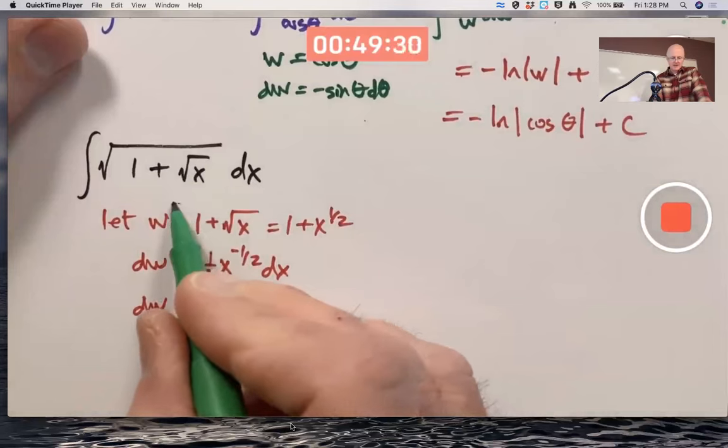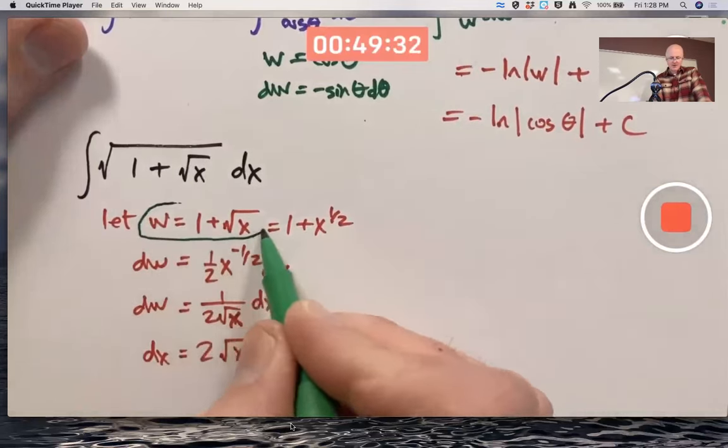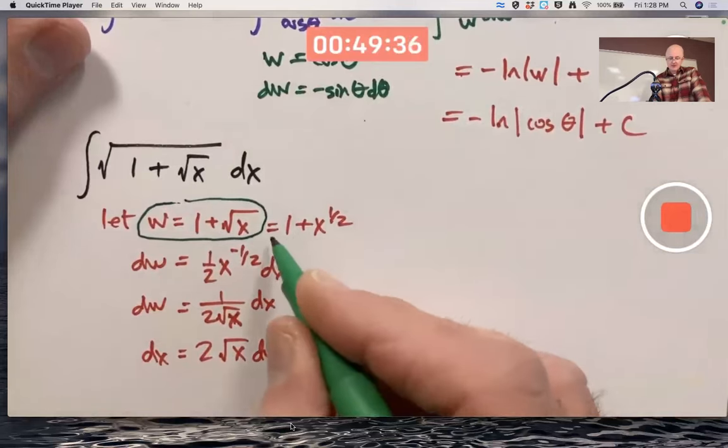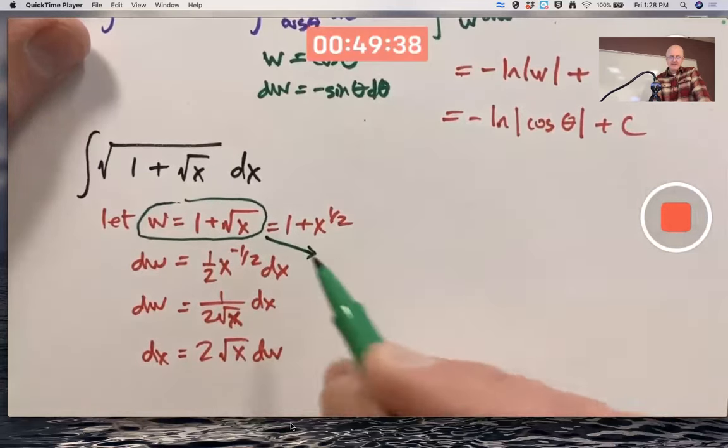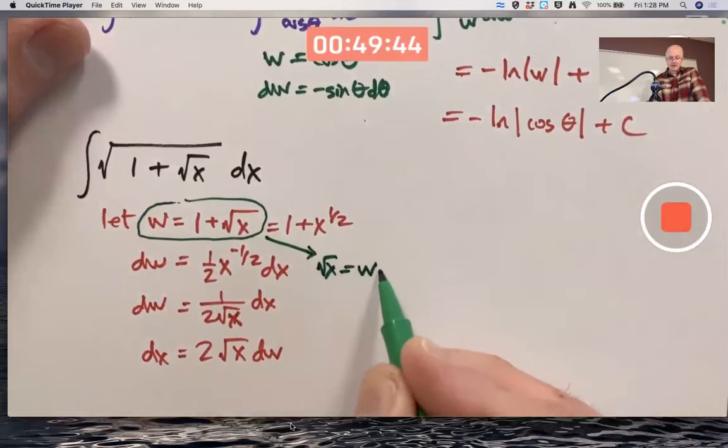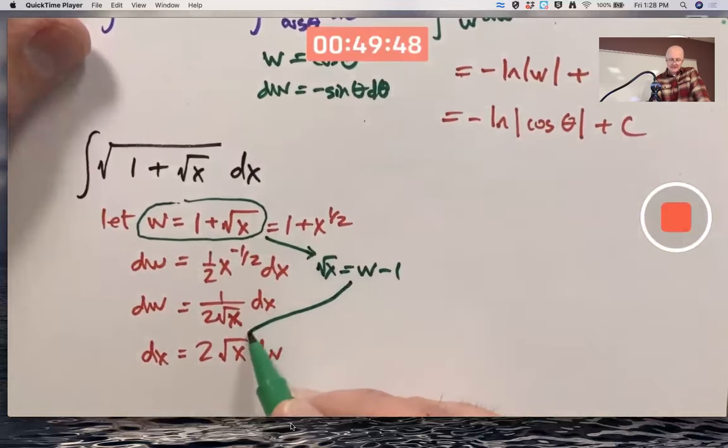Yeah, you could solve this equation for x or maybe square root of x. And that's what I'm going to do. Take that equation and subtract 1 from both sides. Square root of x is going to be w minus 1. And then replace this square root of x with w minus 1.